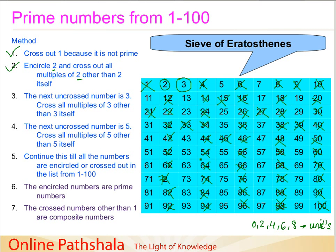49 is not a multiple of 3. 51 is a multiple of 3 — 3 times 17 is 51, so we cross it out. 57 — is 57 a multiple of 3? Yes, 3 times 19 is 57, so 57 is crossed out here.